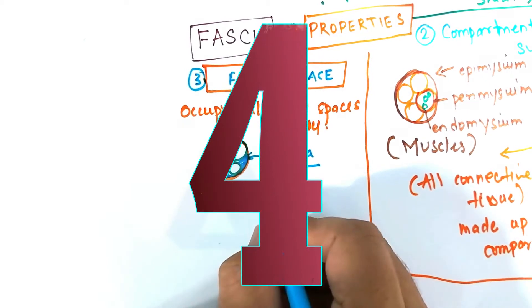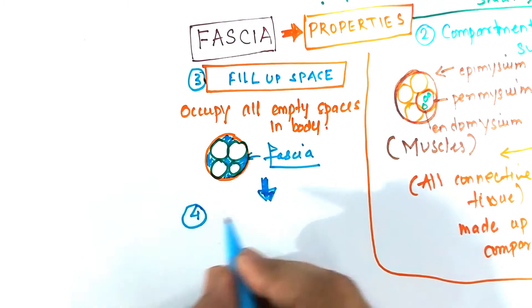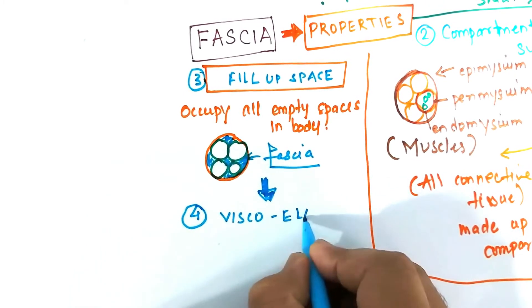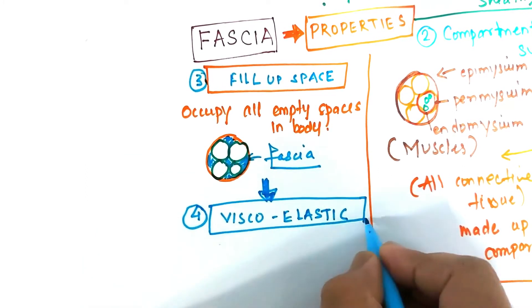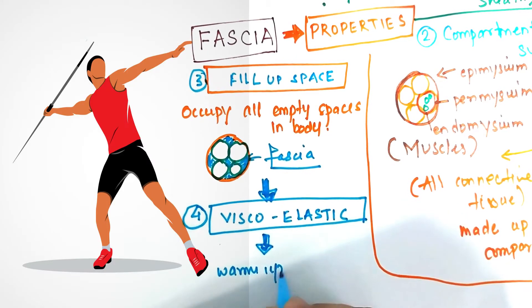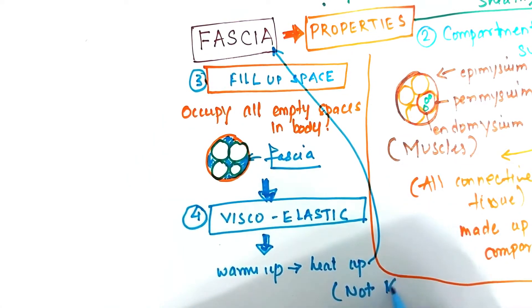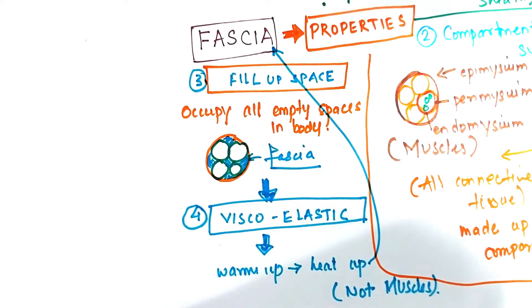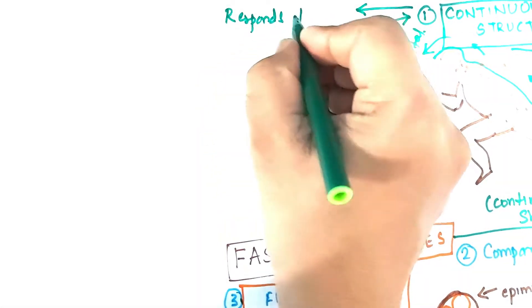Fascia also has a very unique property of being a viscoelastic structure. Now this elastic property within the fascia allows the human to enhance their performance and mobility and also responsible for the force transmission. So higher the viscosity, less elastic will be the tissue. So it is always advisable to warm up the fascia system before carrying out any form of strenuous exercises.